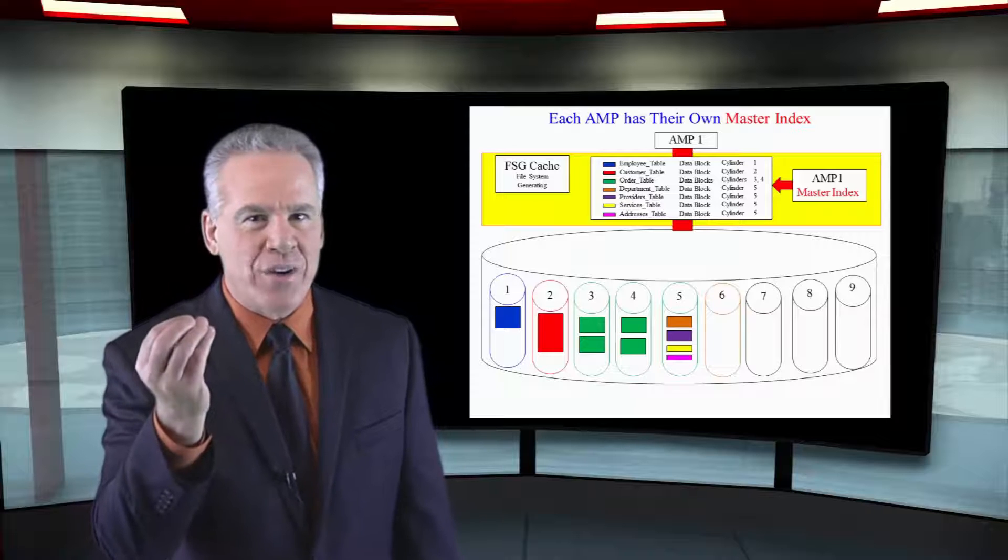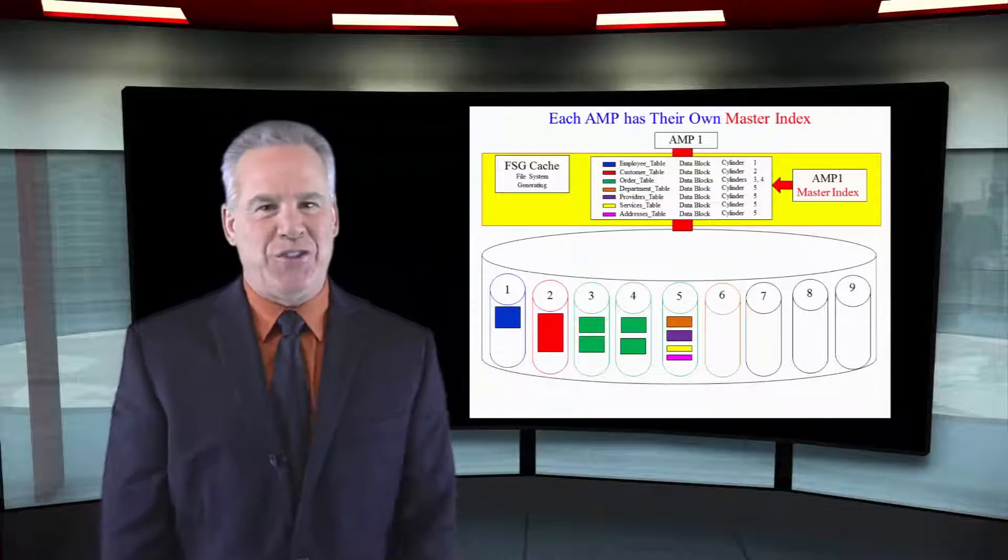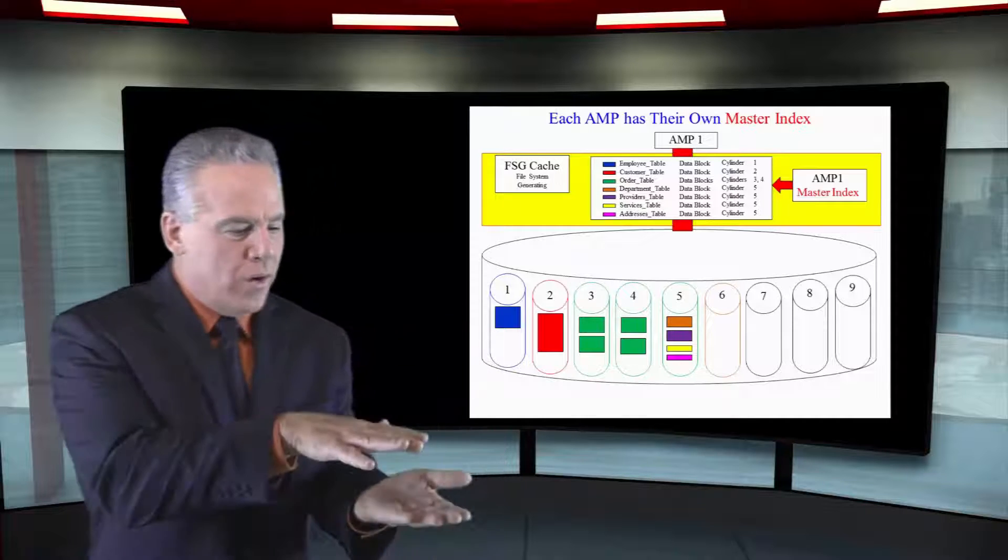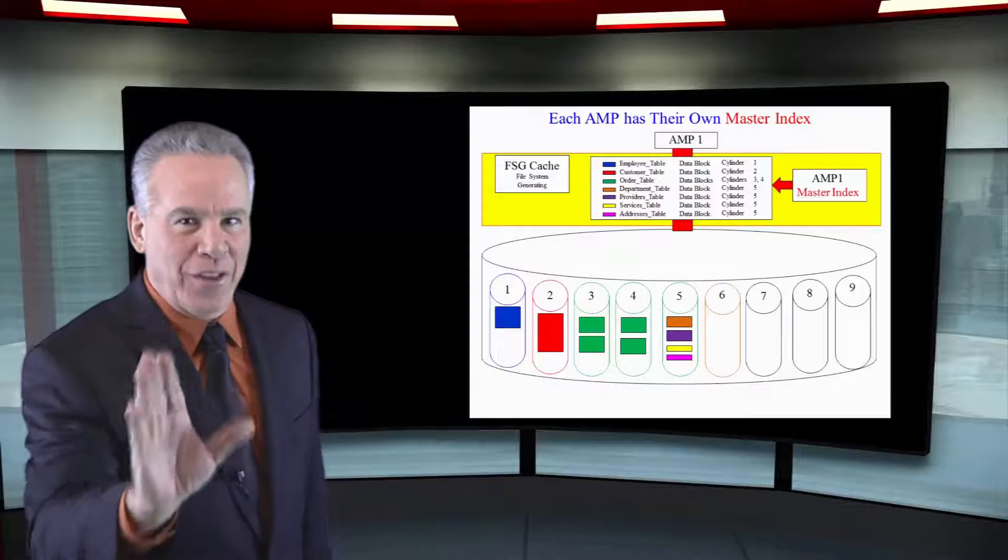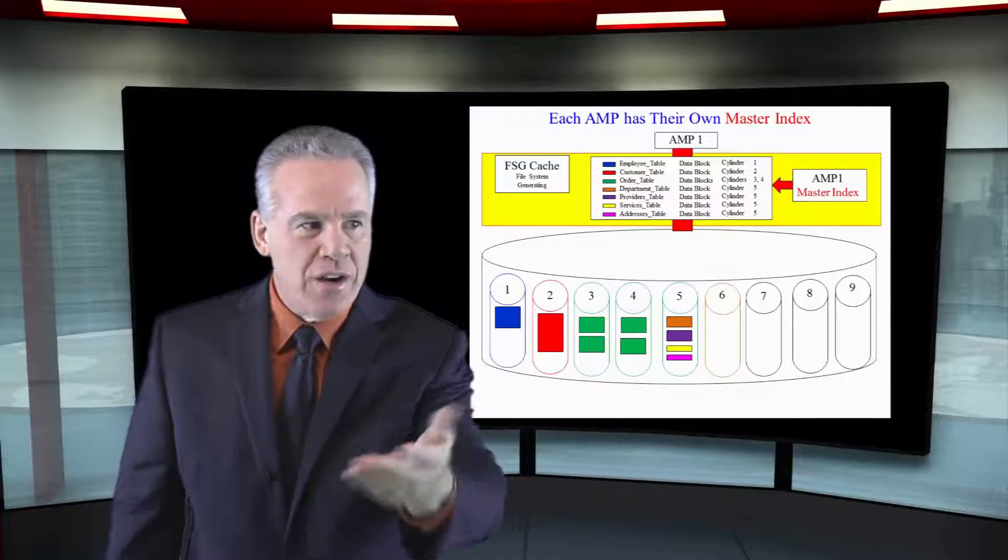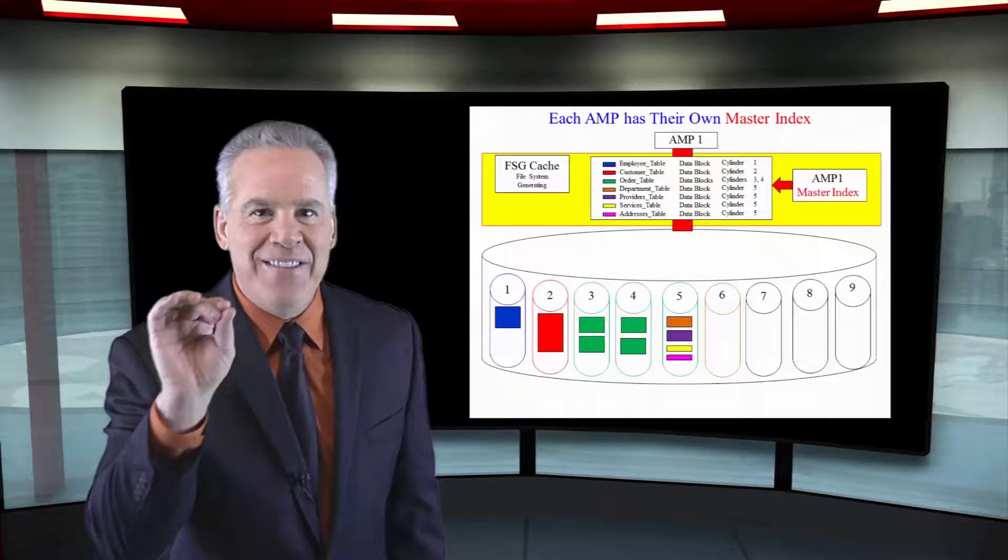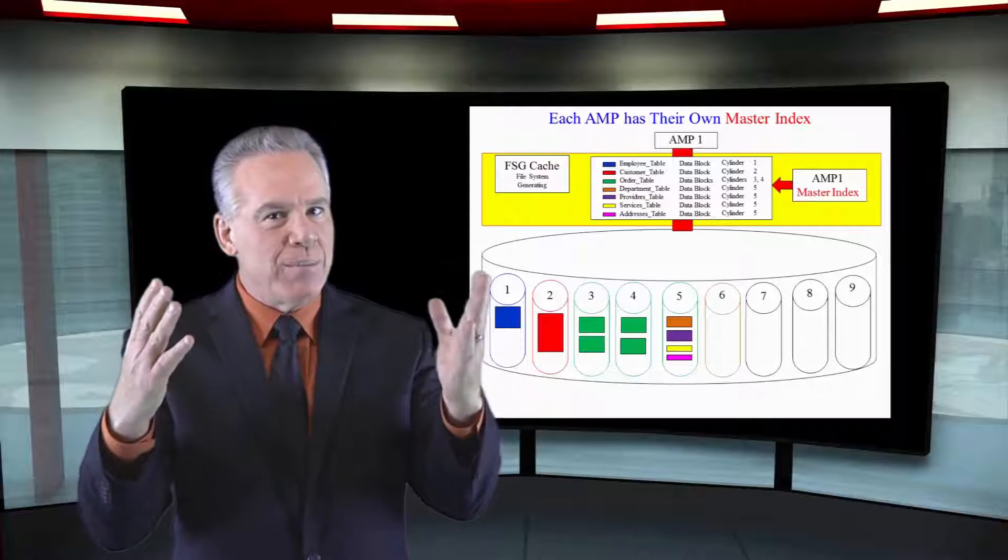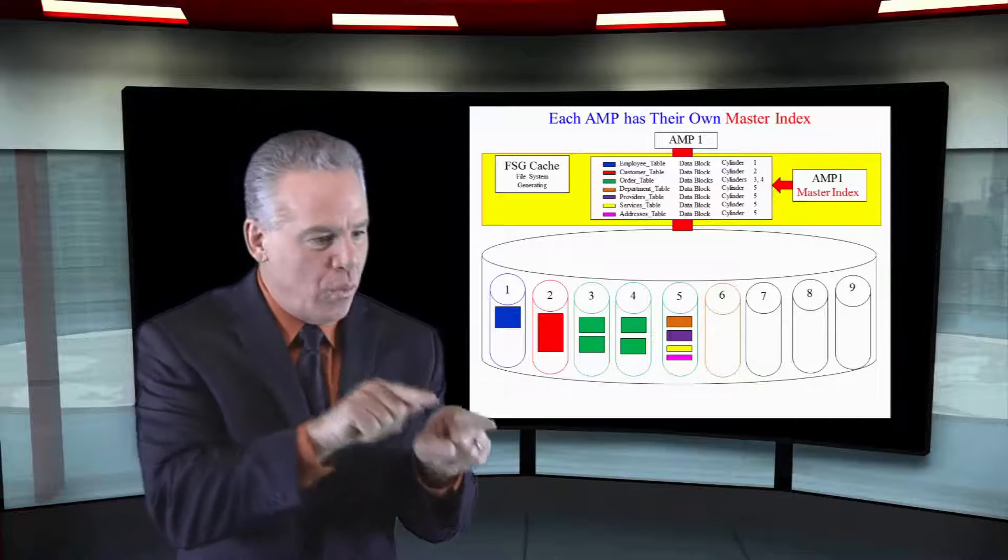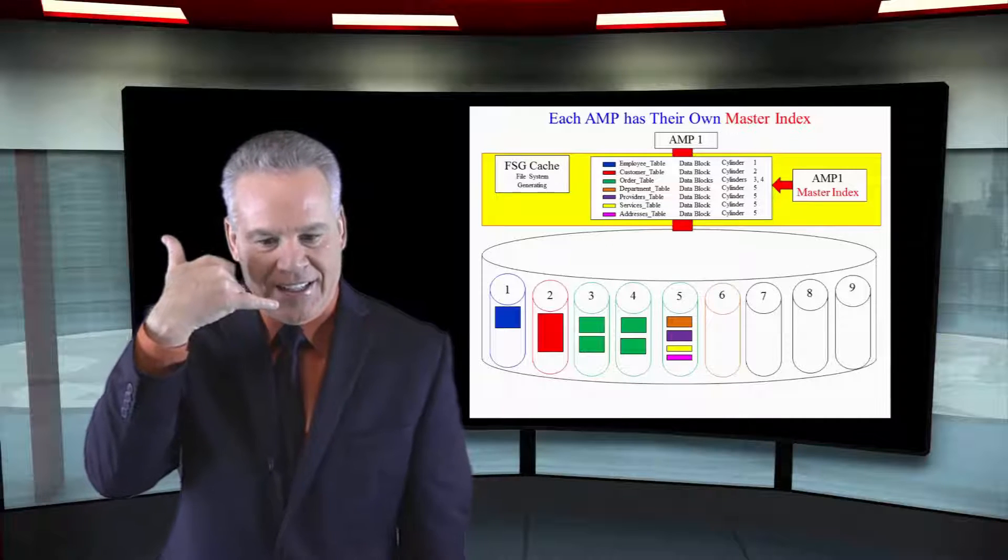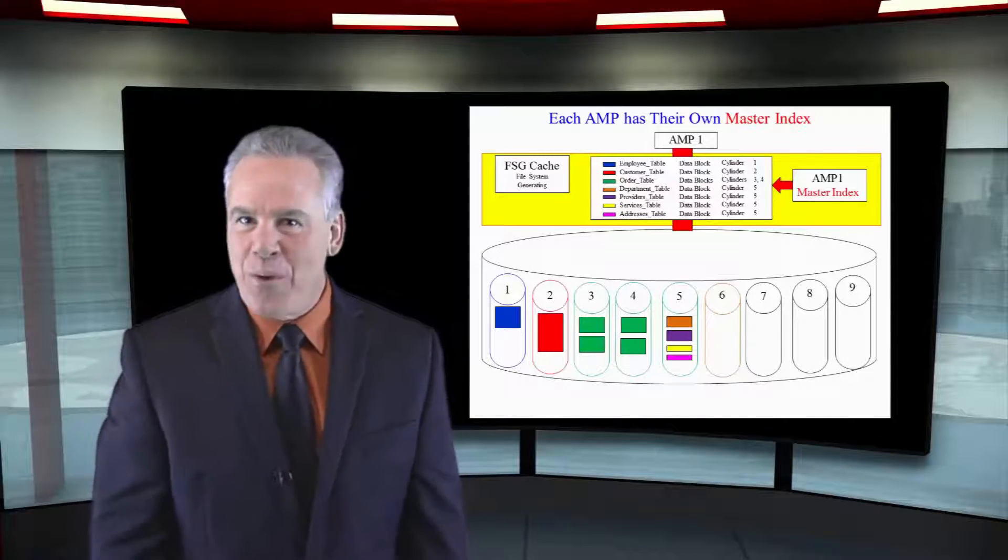Each amp has a master index that is always in its FSG cache. That master index tells that amp where it is placed, all of its data in all of its tables. Let's take another look at this. Notice here, we've got the blue table. It's in one cylinder. The red table's in a cylinder. We have got the order table in green in two different cylinders. We can see that it's split, and there's four blocks in total. But, I want you to notice this last cylinder here. There are many tables in that one cylinder. And, as soon as an amp is told, you go query this table, it always looks in the master index and calls down to that disk, I need cylinder number four. Get it? That's the way it's going to work.